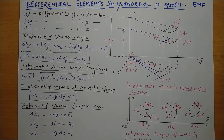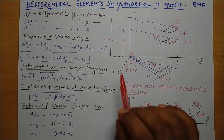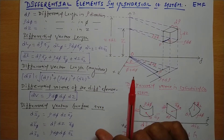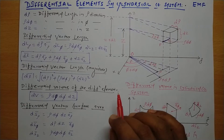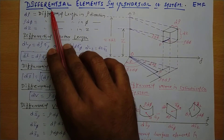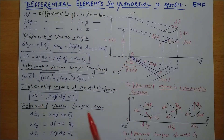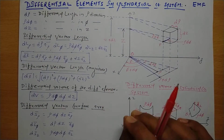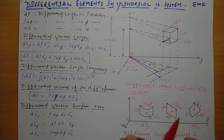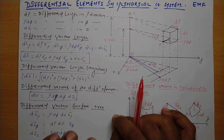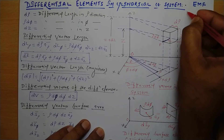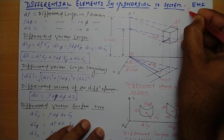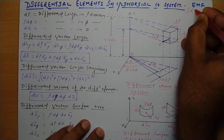This is a very important topic, especially for the numericals. Here we have differential elements to find out, which component in the cylindrical coordinate system. We know that in the cylindrical coordinate system, the coordinates are rho, phi, and z.